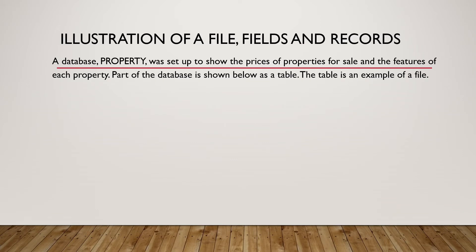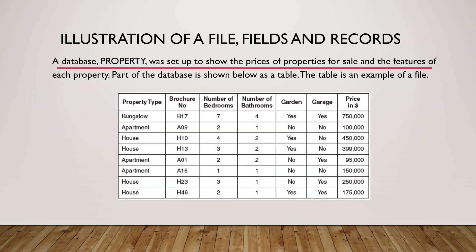Illustration of a file, fields and records. A database of properties was set up to show the prices of properties for sale and the features of each property. Part of the database is shown below as a table. The table is an example of a file. This table consists of fields and records. The fields will be the columns and the records will be the rows.